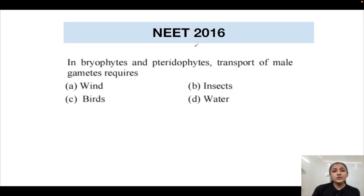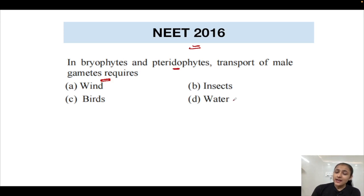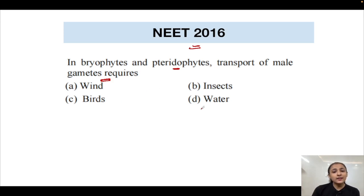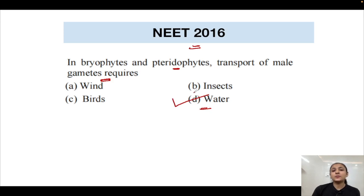NEET 2016 question: In bryophytes and pteridophytes, transfer of male gametes requires what? From the beginning of this lecture, we established that bryophytes are called the amphibians of the plant kingdom because they can live on land but need water for the process of sexual reproduction. Water is essential for the transport of male gametes. The correct answer is option D — water.